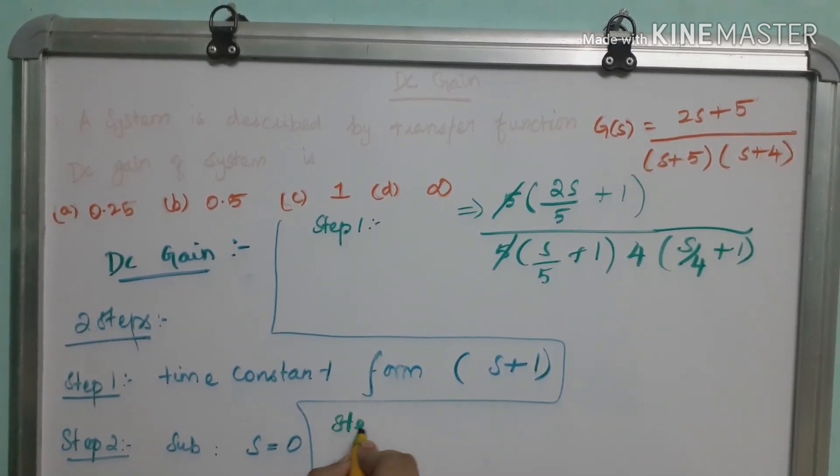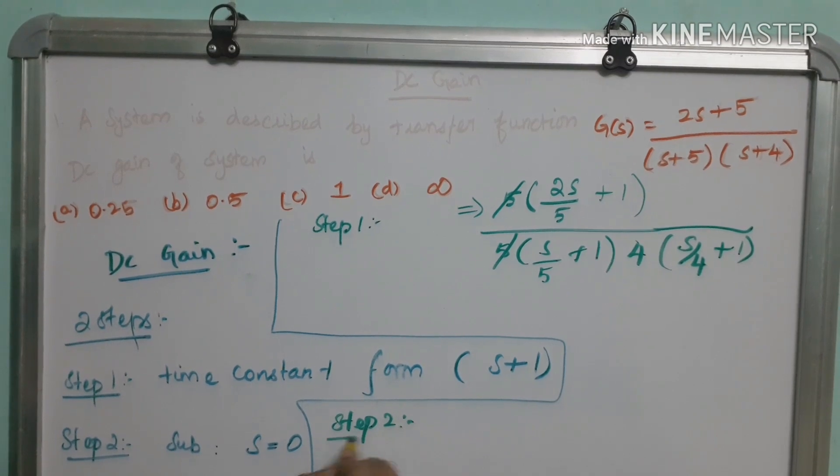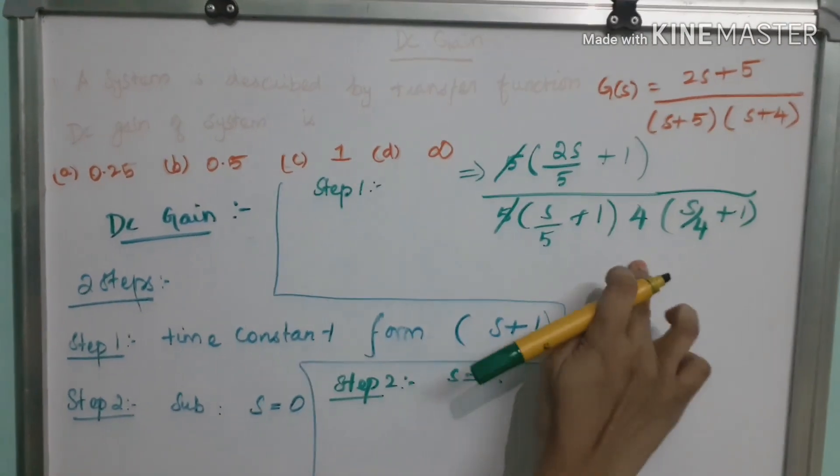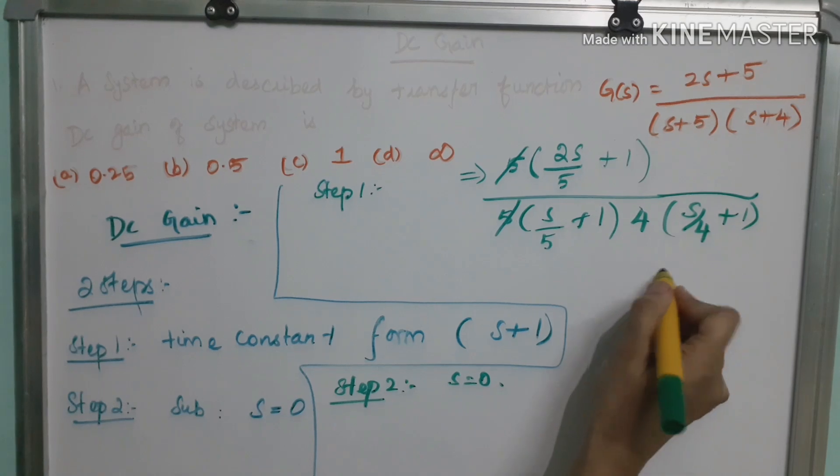Next, our step 2. Step 2 is to substitute s is equal to 0. We have to substitute s is equal to 0 in this equation.